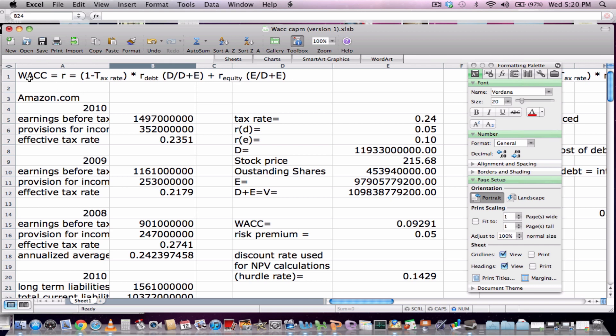So I'm using Amazon.com, for example, and the first thing we need to do is find the tax rate.